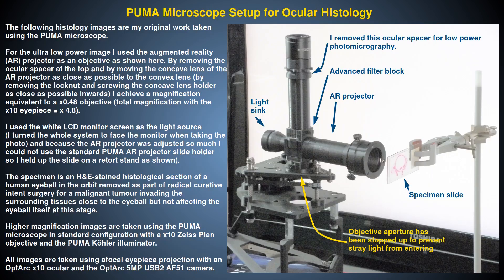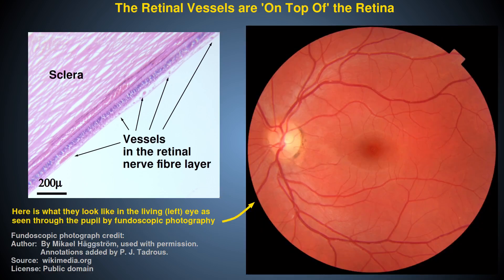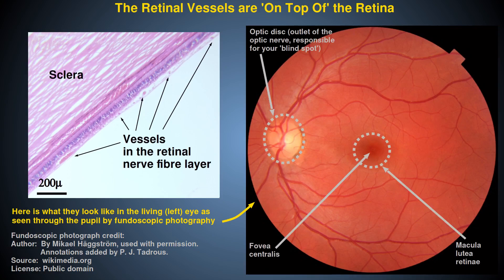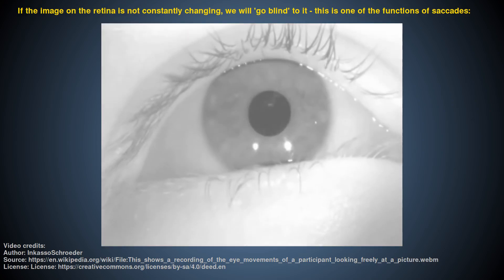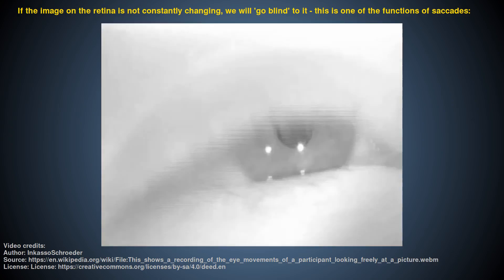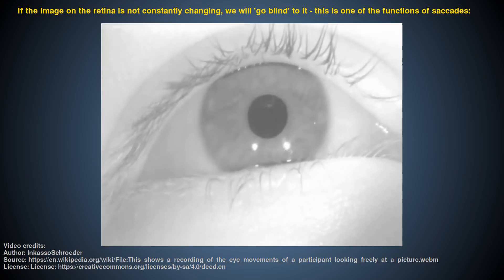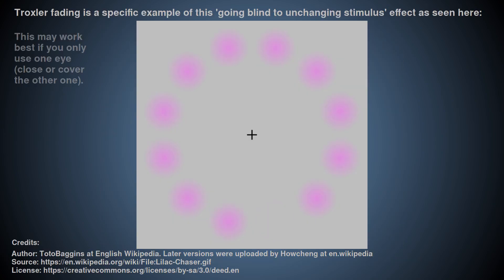There is also a temporal context to the perception of both colours and brightness, in that we tend to only perceive things that change over time. This is why you don't normally see the blood vessels constantly on top of your retina, and why our eyes undergo continual motions called saccades and microsaccades to keep the retinal image changing. If there is no change in the image falling on the retina for long enough, we essentially go blind to that image. A good example is the Troxler fading effect, such as the Lilac Chaser illusion.